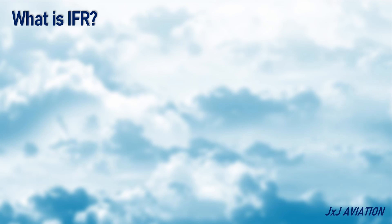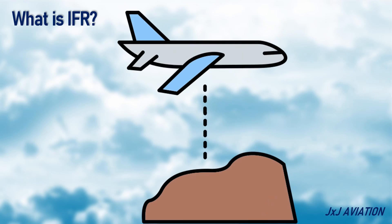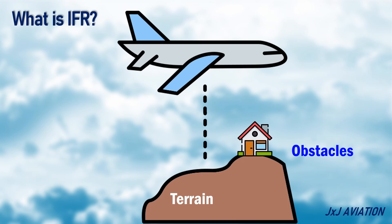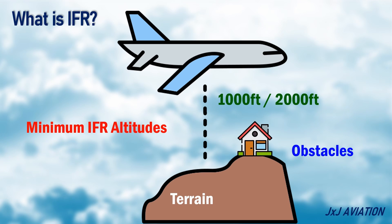Because of the lack of visual cues, the aircraft should avoid terrain or obstacles by a safe margin based on the altimeter readings. So there are different minimum altitudes provided on the charts for a safe flight. Let's look at a few minimum altitudes for an IFR flight.